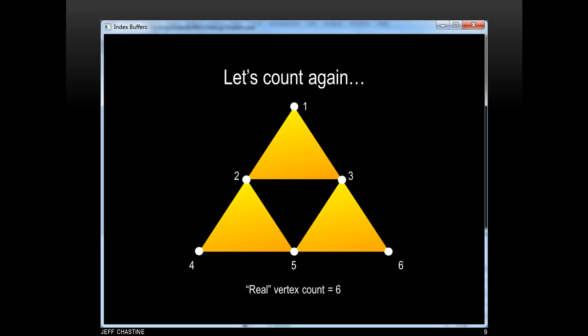Now, if you think about it, the reason that we might be able to do it more efficiently is because the three vertices that you see here are used more than once. For example, if you look at this vertex here on the left, you can see that it's used in the top triangle as well as the lower left triangle.